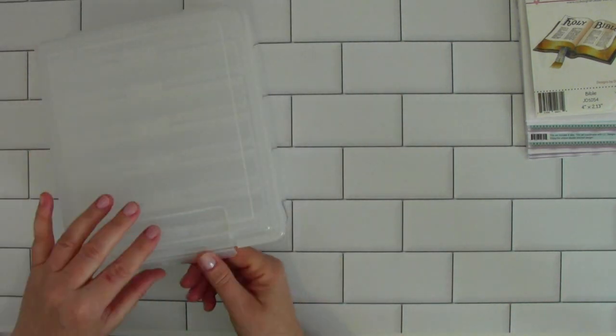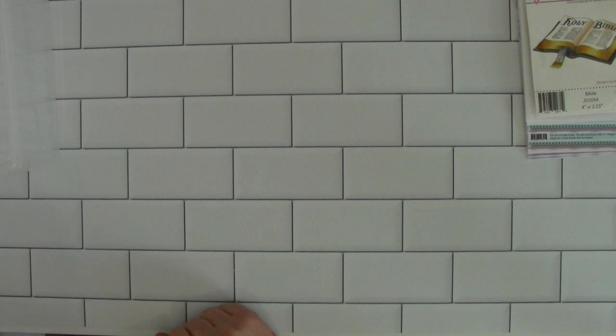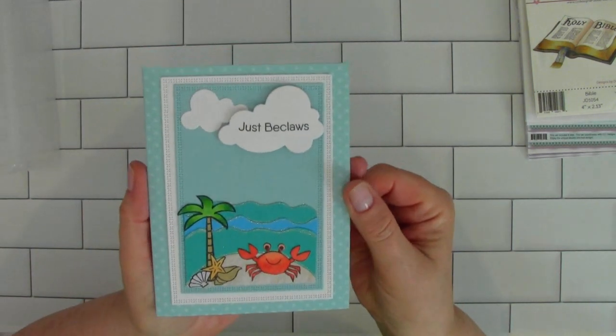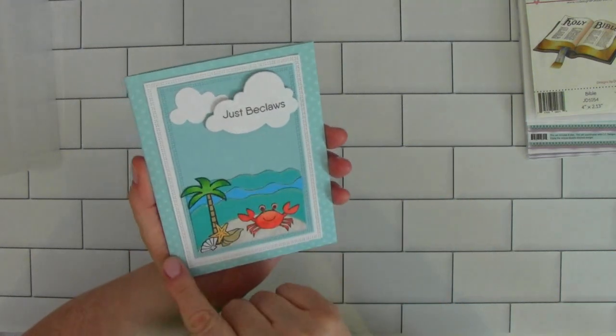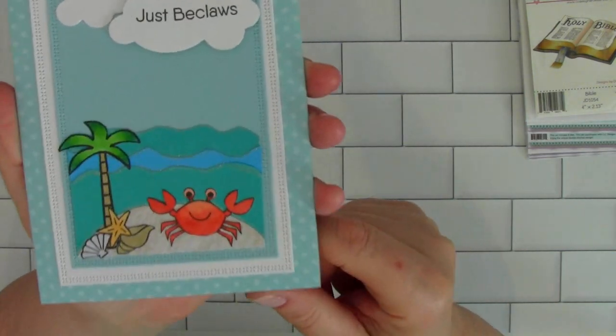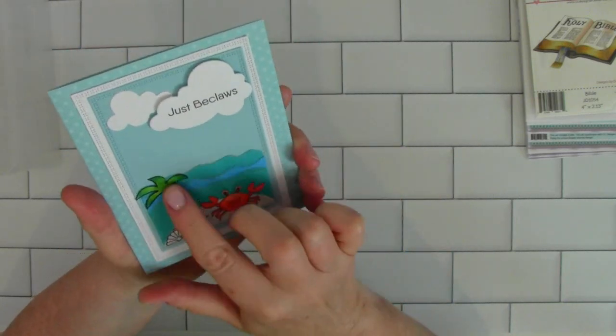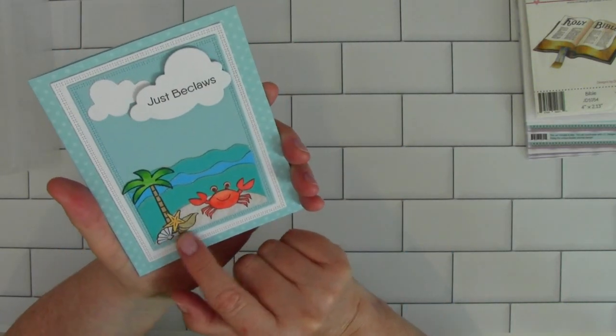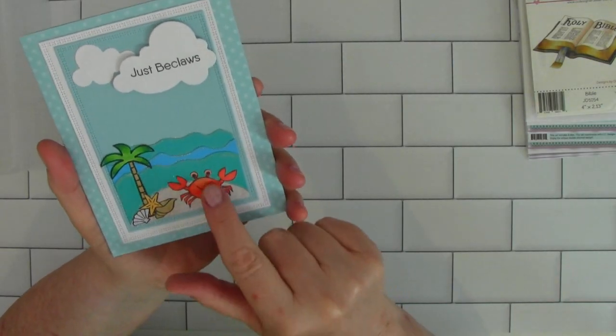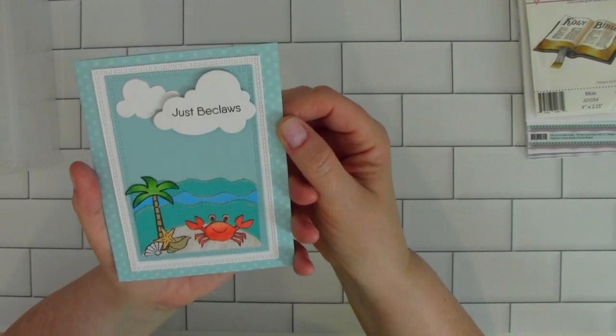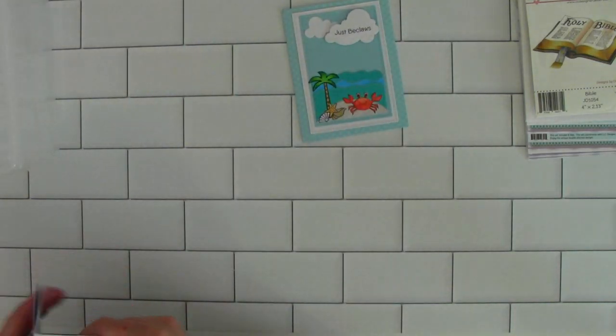I truly appreciate it. This does snap shut, I just don't want to do that on camera because it's kind of loud. Look at this adorable card that she sent along with these goodies. It's so cute. I love polka dots. She knows that. It has rectangle dies with the stitching and some shimmer on the waves here. You've got a palm tree, a starfish, some seashells, a crab, and it says just be claws. I love it. It's so cute, I just giggled. It got my funny bone as soon as I opened it up.